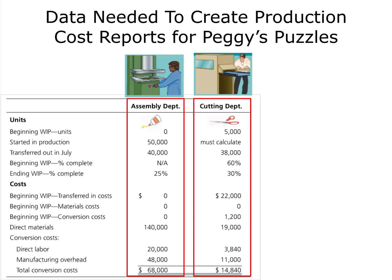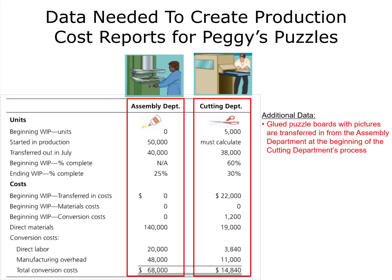We still need a bit more additional data. Glued puzzle boards with pictures are transferred in from the assembly department at the beginning of the cutting department's process. Conversion costs, which are direct labor and manufacturing overhead, are incurred evenly during the cutting department's process.